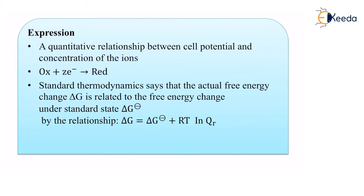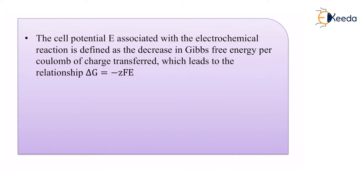By the relationship: delta G equals delta G° plus RT ln(QR), where QR is the reaction quotient. The cell potential E associated with an electrochemical reaction is defined as the decrease in the Gibbs free energy. Because we are talking about a decrease, a negative sign applies, giving us the relation delta G equals minus ZFE. This minus sign comes from the decrease in the Gibbs free energy — delta G per coulomb of charge transfer.